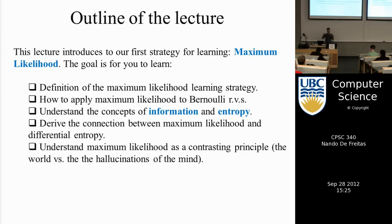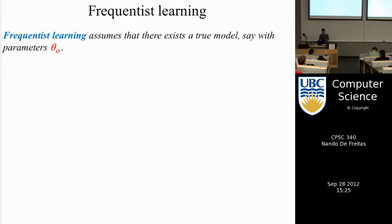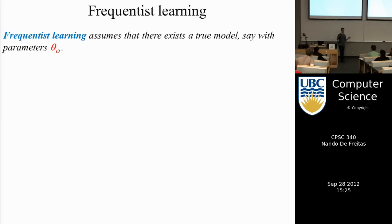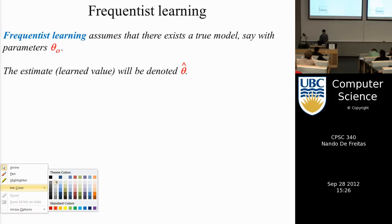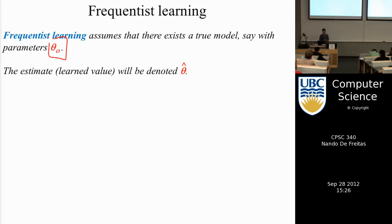Most of the things we think we see are actually being invented by your brain. Being able to generate data is a very important part of cognition. The principle of maximum likelihood is based on frequencies of events — we go back to this view of probability based on frequencies. This form of learning assumes that there is a truth — one true value from which the data has been generated. We call that truth theta-naught.